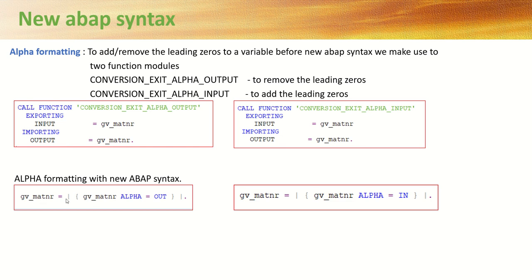In new ABAP syntax, instead of using a function module, we can write a single line of code: on the left-hand side is the result variable, then a pipe sign, followed by the variable name and the keyword 'alpha'. If you want to remove leading zeros use 'alpha = OUT', and if you want to add leading zeros use 'alpha = IN'. This is how we use alpha formatting in the new ABAP syntax.